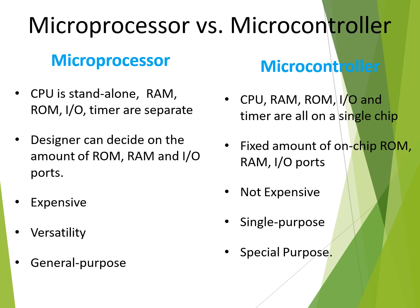Now let's see the differences between microprocessor and microcontroller. In a microprocessor, the CPU is standalone — it has the CPU separately, and RAM, ROM, IO, and timers have to be connected externally. In a microcontroller, it has CPU, RAM, ROM, IO ports, and serial interface — all available in a single chip.